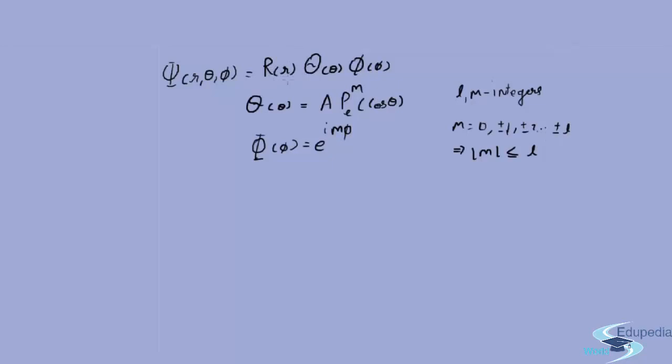Now our goal is to find R of R, which is the radial function. First we'll take a new function U of R equal to R of R times R. This is just because you have R squared d by dR and things like that—this will just make it easier.